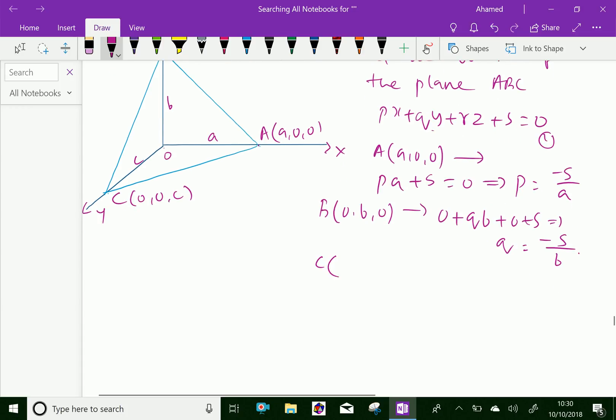Similarly, the point C, substitute 0, 0, C, which gives R times C plus S equals 0, which gives R is minus S over C.